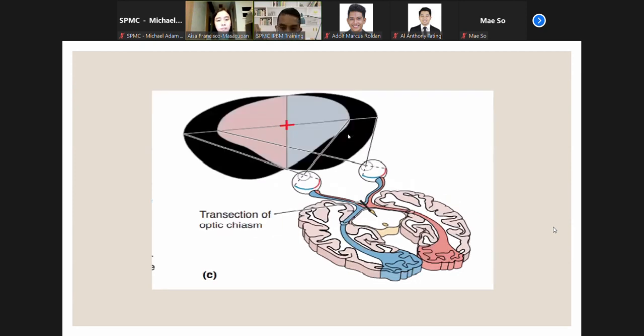If the optic chiasm is involved or slipped down the middle, only the crossing fibers will be damaged and the peripheral vision will be lost in both eyes. As shown in this picture, the peripheral vision is lost as manifested by black color on both sides.